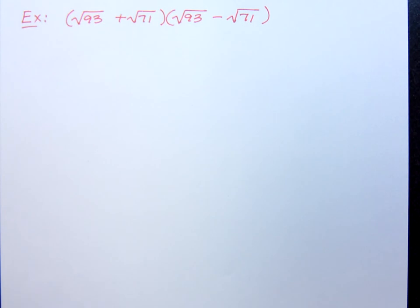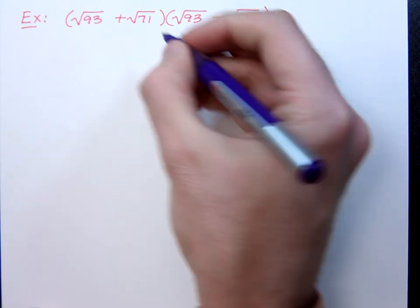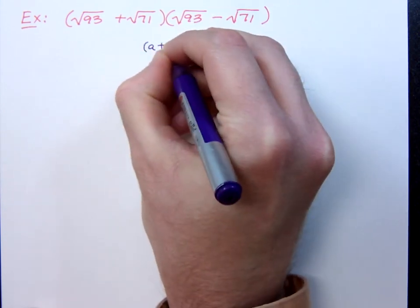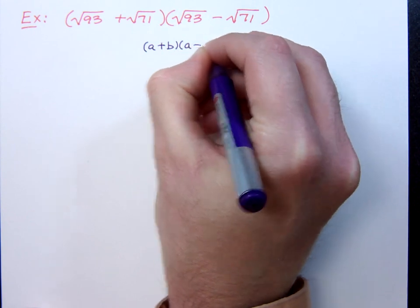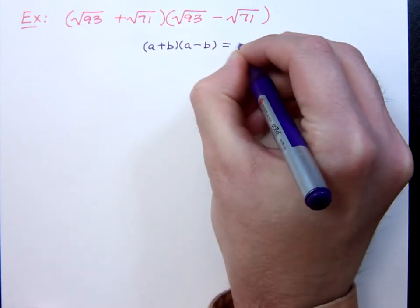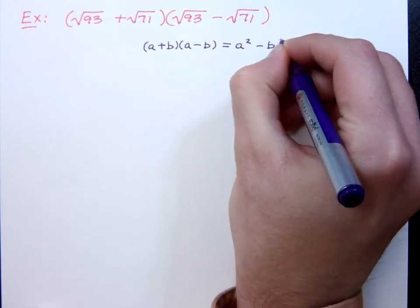Now, multiplying these guys shouldn't be too bad if you remember the formula that we had just written in one of the other videos. Remember that these guys, the way that they are written, happened to fall into the formula that would give us the difference of two squares.